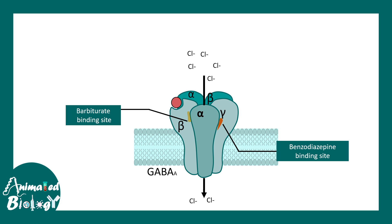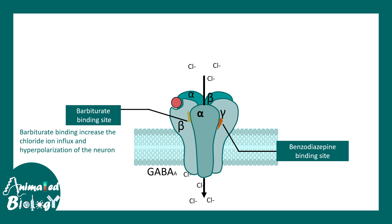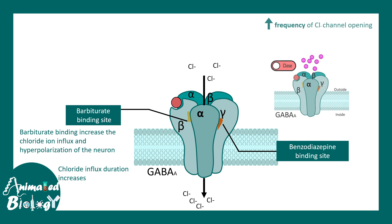What is the difference in terms of channel kinetics? When these drugs bind, chloride influx is augmented. The channel opening duration can be increased — that is what happens with barbiturates. In the case of benzodiazepines, the frequency of opening increases, meaning the channel opens more frequently, allowing more chloride ions to enter.